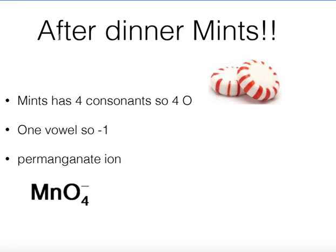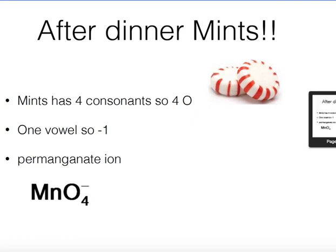You could also extend the mnemonic — for example, 'Nick the camel have after dinner mints.' From 'mints,' there are four consonants, so four oxygens, and you remember MN for manganese. It has one vowel, giving a negative one charge. That gives you the permanganate ion: MnO4^-, which is also a commonly required polyatomic ion to memorize.